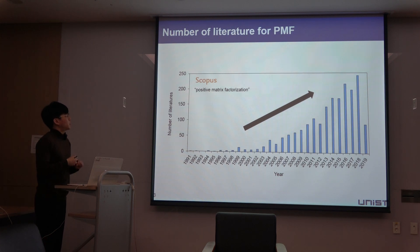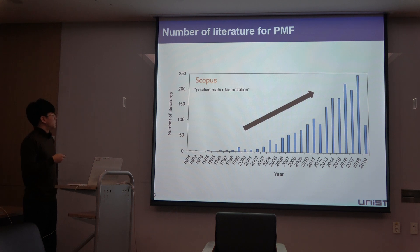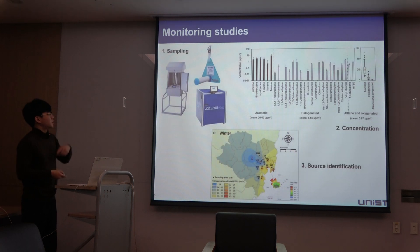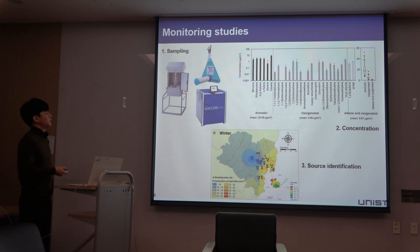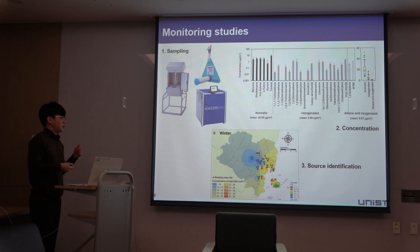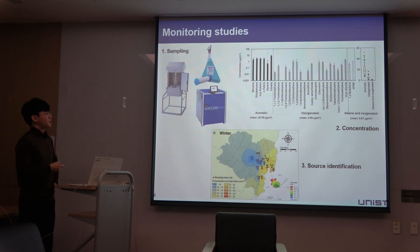I looked for the keyword 'positive matrix factorization' in Scopus. The number of publications is still growing from 1991 to 2018, which shows why we have to use the PMF model. In many monitoring studies, our laboratories collect air samples using samplers and analyze target compounds. We announce the concentration level and profile, and identify major sources — for example, hotspots due to wind direction or nearby industrial facilities. That is why we need to use a receptor model to get high-quality data.